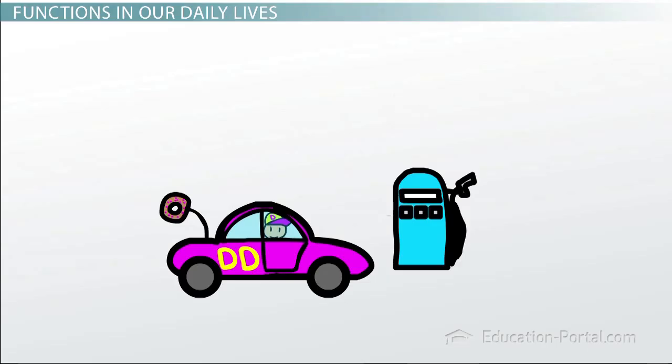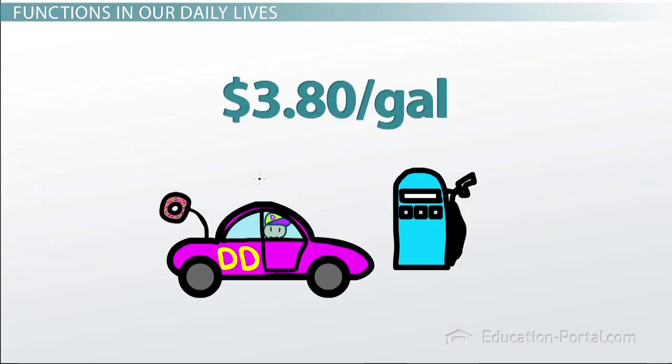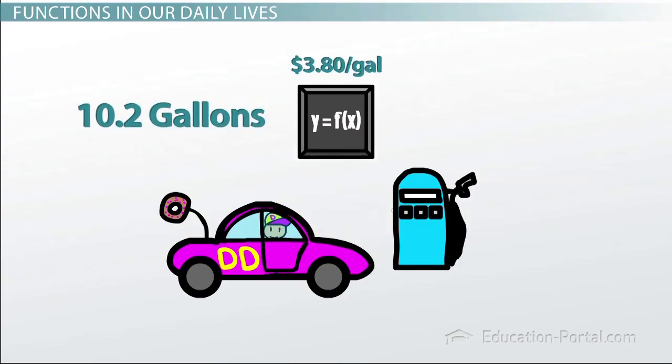So let's say gas is $3.80 a gallon. If you're going on a long road trip, you might need, say, 10.2 gallons. If you pump 10.2 gallons and gas is $3.80 a gallon, the gas station is going to charge you $38.76.